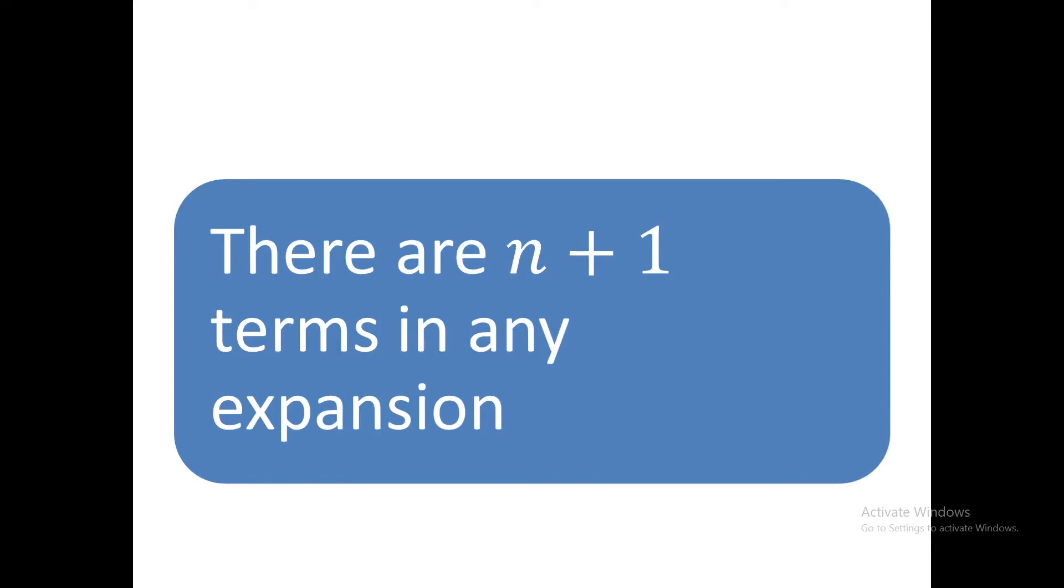Another one is there are n plus 1 terms in any expansion. It means that if exponent is 1 there are two terms on right hand side. If exponent is 2 there are three terms on the right hand side, and the same process will continue for any exponent.